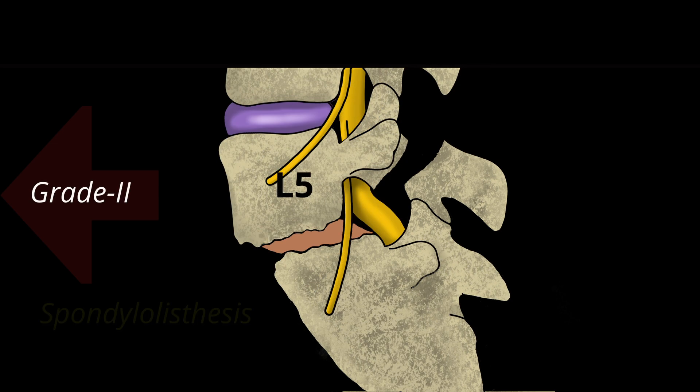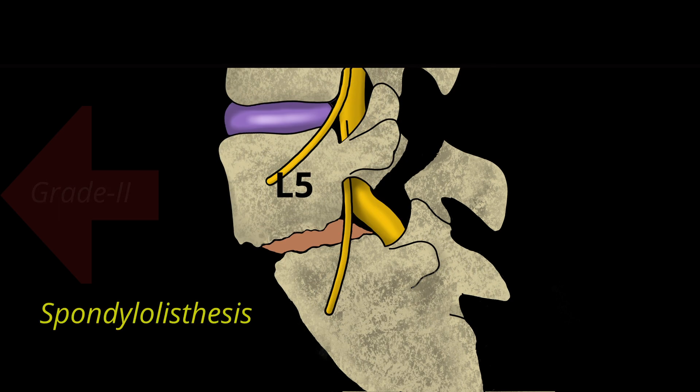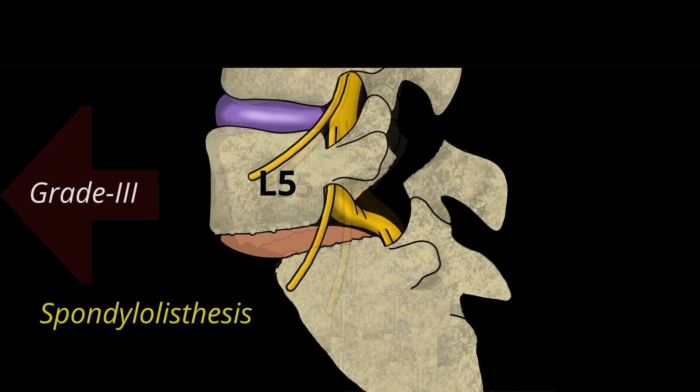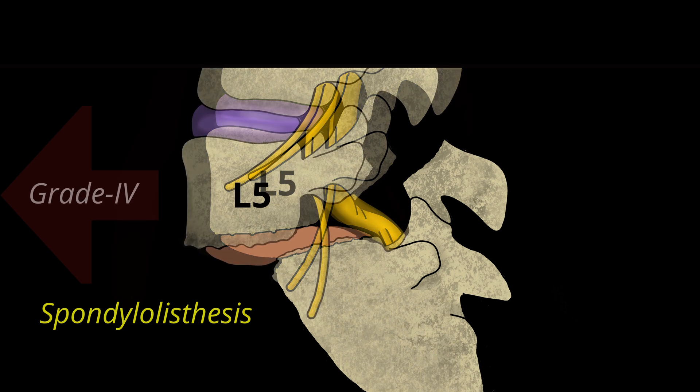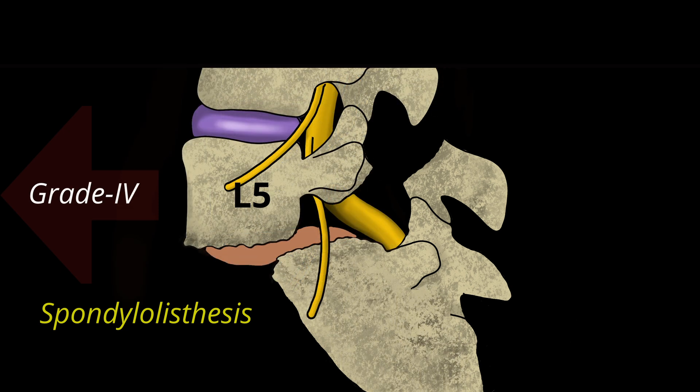This slippage is called spondylolisthesis, and the slip can gradually progress over a period of years, even decades.